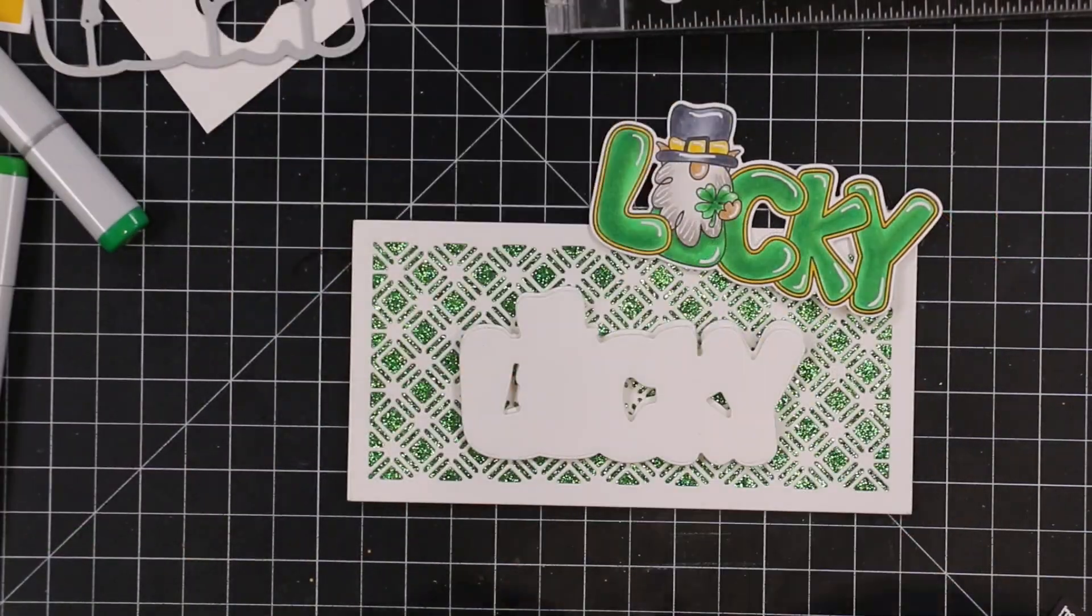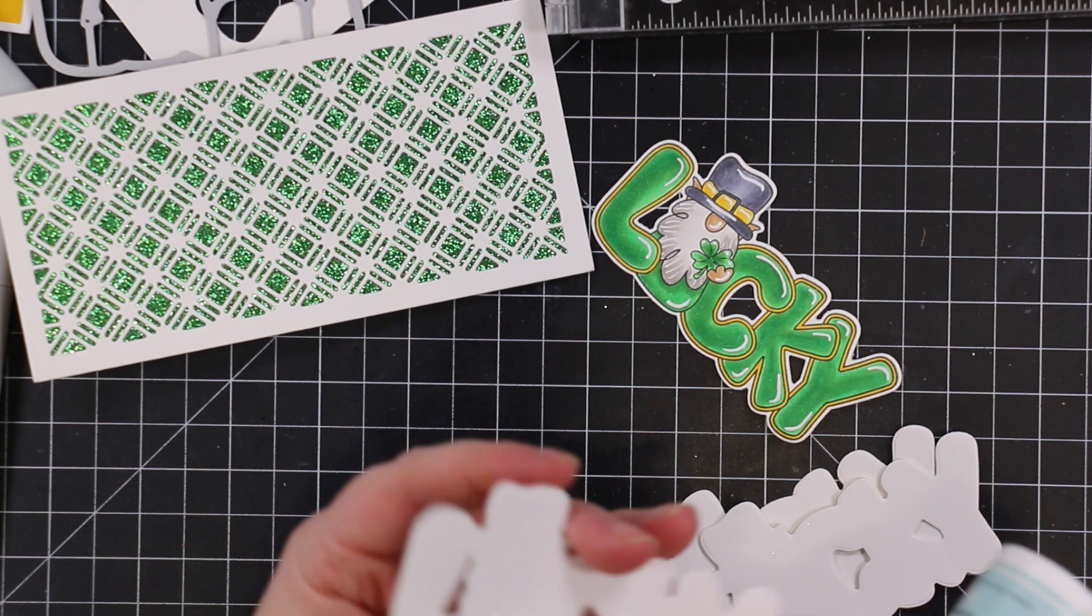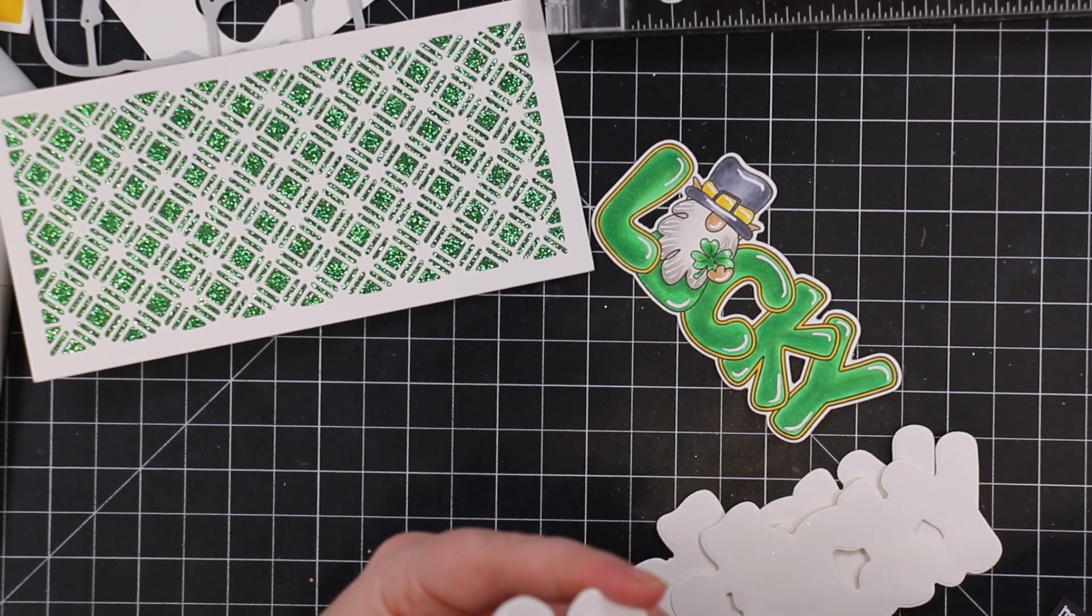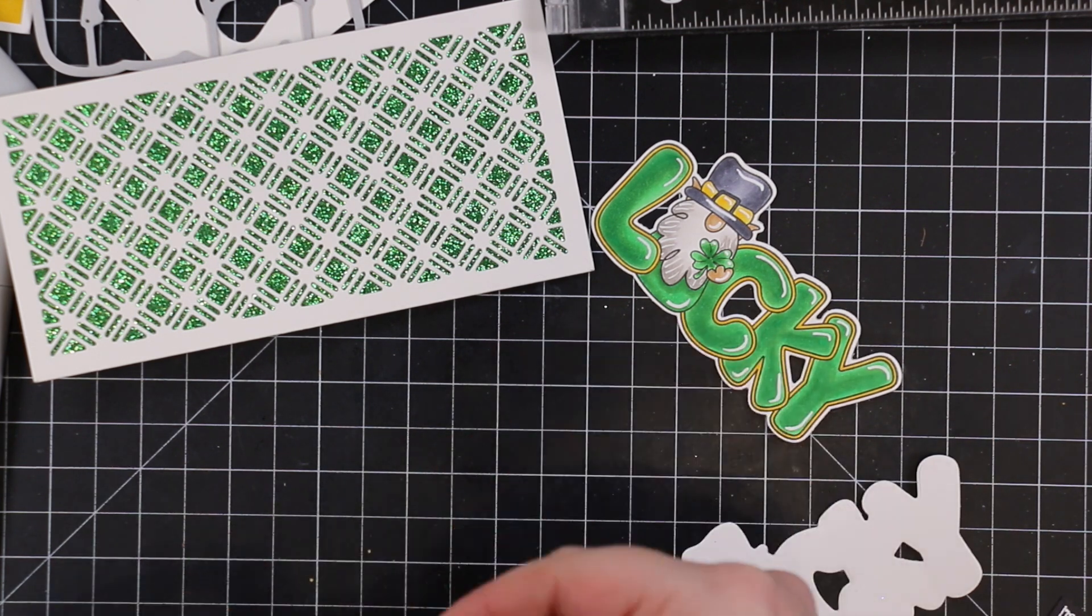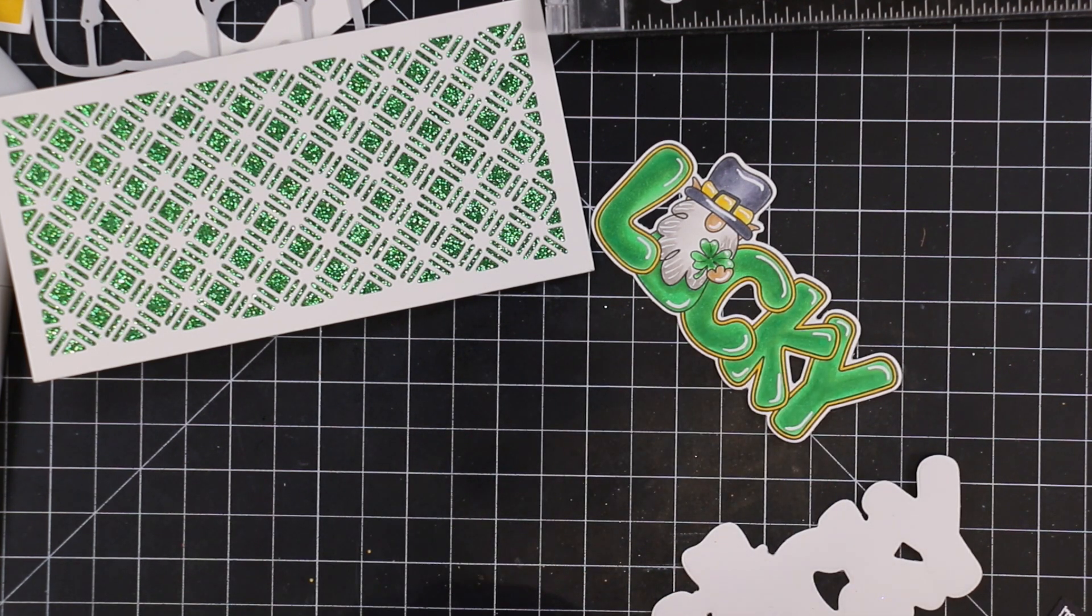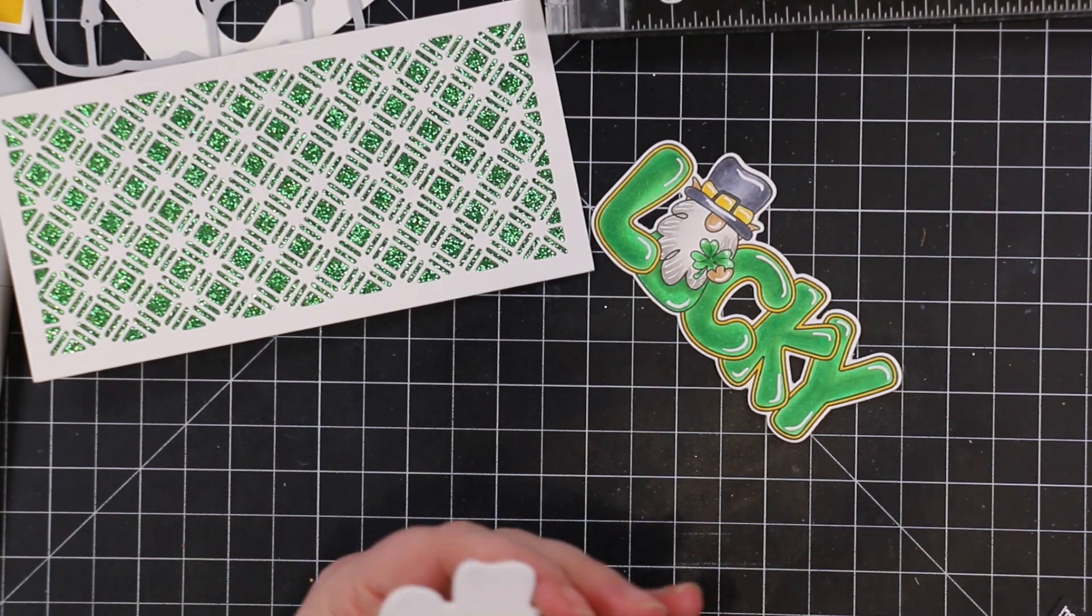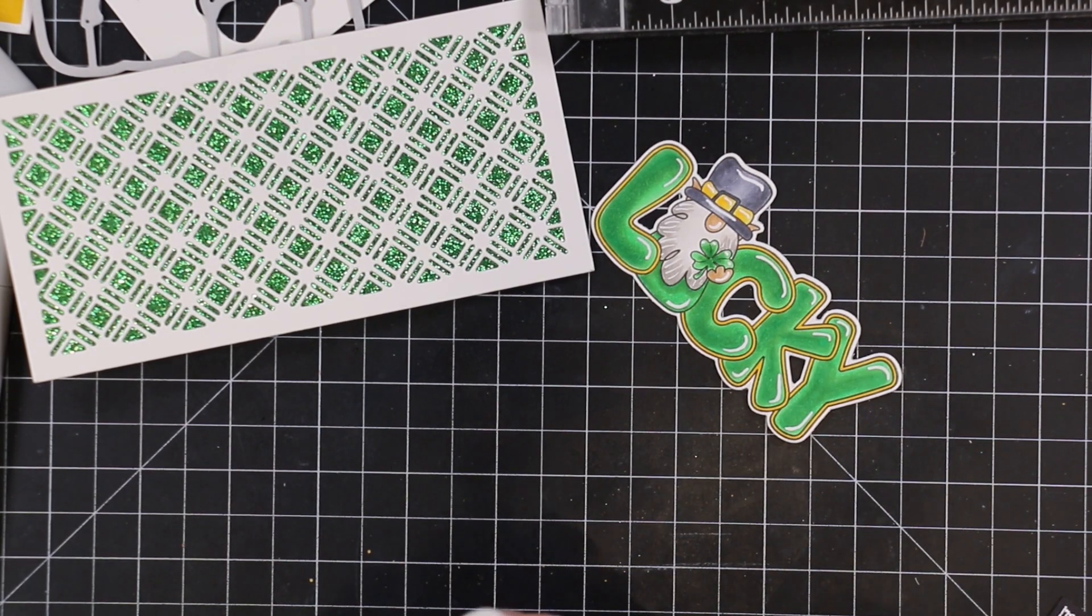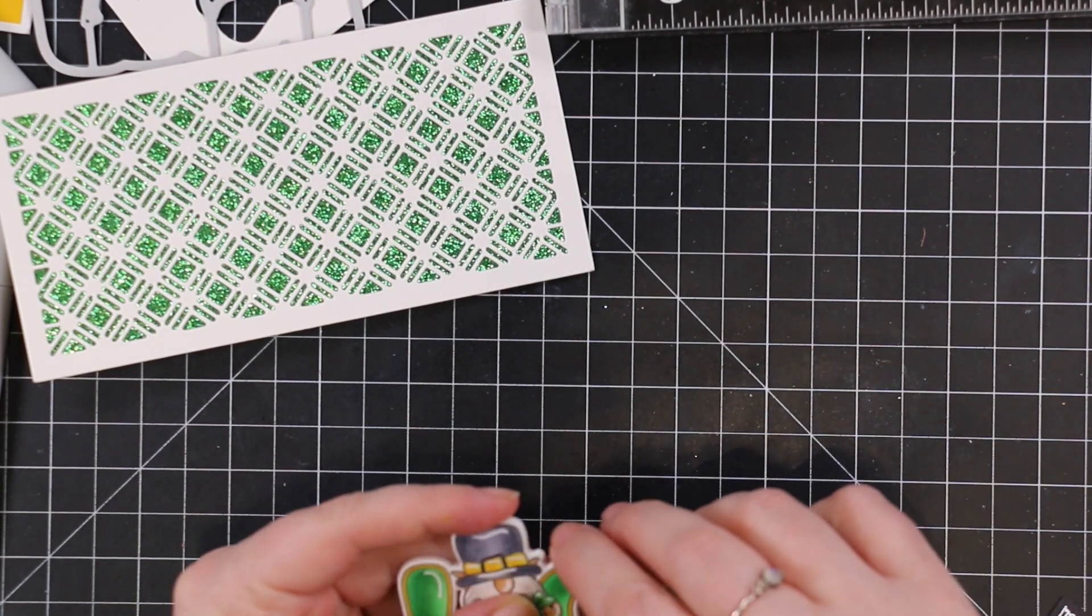Rather than play around with foam tape, I die cut more scraps with the coordinating wafer die for the gnome lucky set and adhered them together for dimension. This also gives things more strength so they don't get crushed in the mail. I stacked three layers together, then topped it with the colored one.